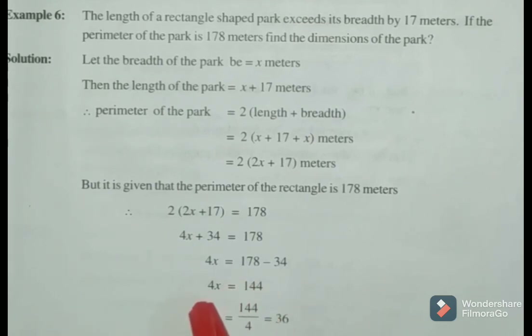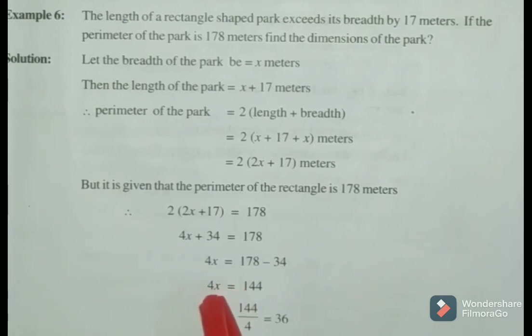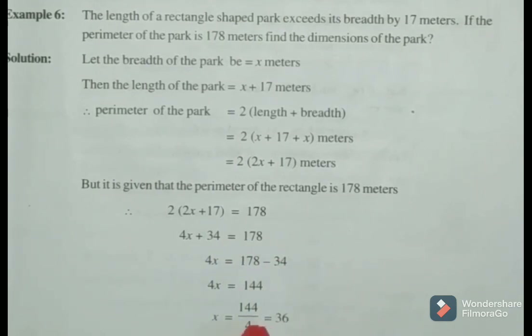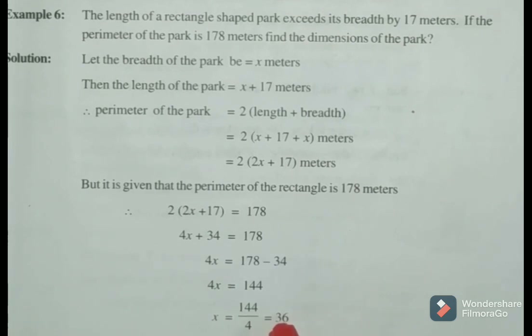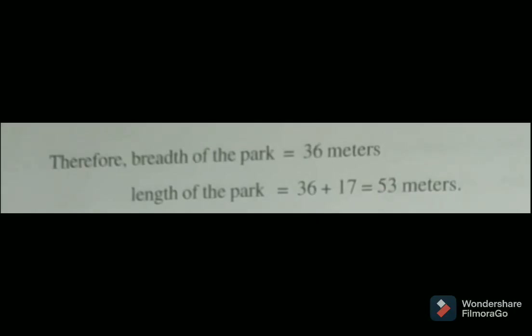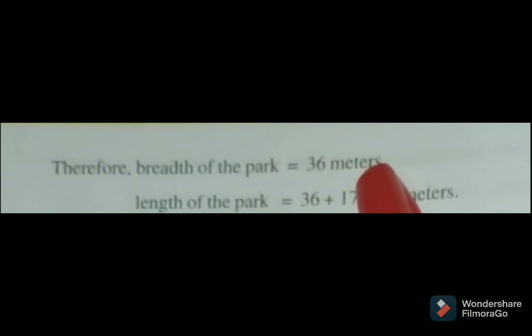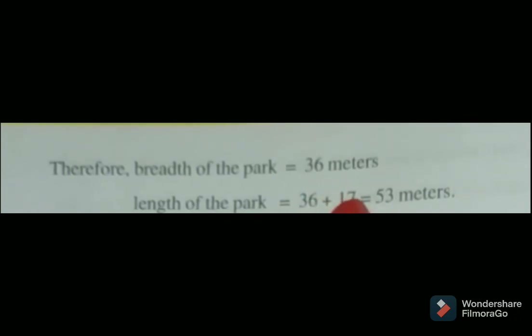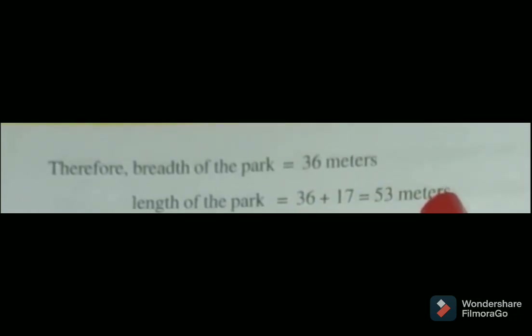In LHS, 4 is multiplied by X, so transposing 4 to RHS gives division. Therefore X equals 144 divided by 4, that is equal to 36. Therefore the breadth of the park X equals 36 meters and the length of the park X plus 70 equals 36 plus 17 equals 53 meters.